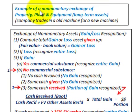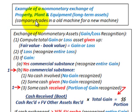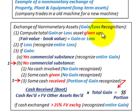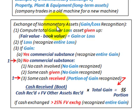What we're going to be looking at here is an example of a non-monetary exchange of some property, plant, and equipment, which deals with long-term assets. Our example is going to be where a company trades in an old machine for a new machine, and they're also going to receive cash on this trade-in. When we're dealing with these non-monetary exchanges of assets, we have specific rules that we have to follow.